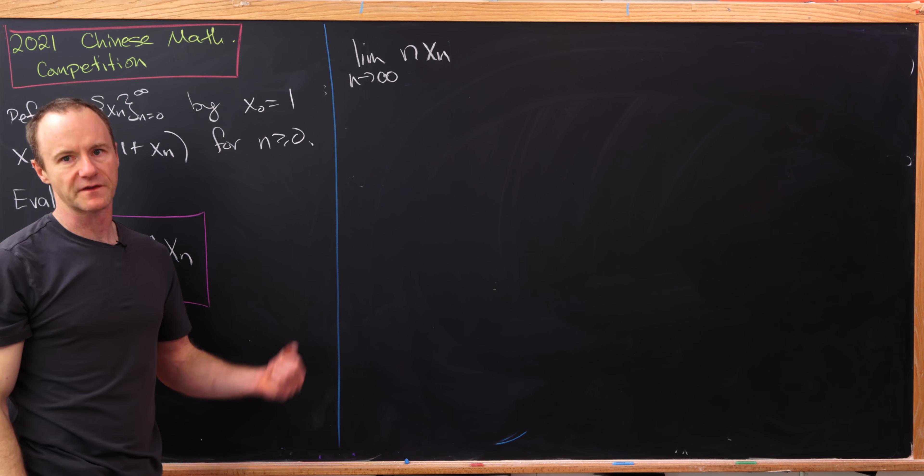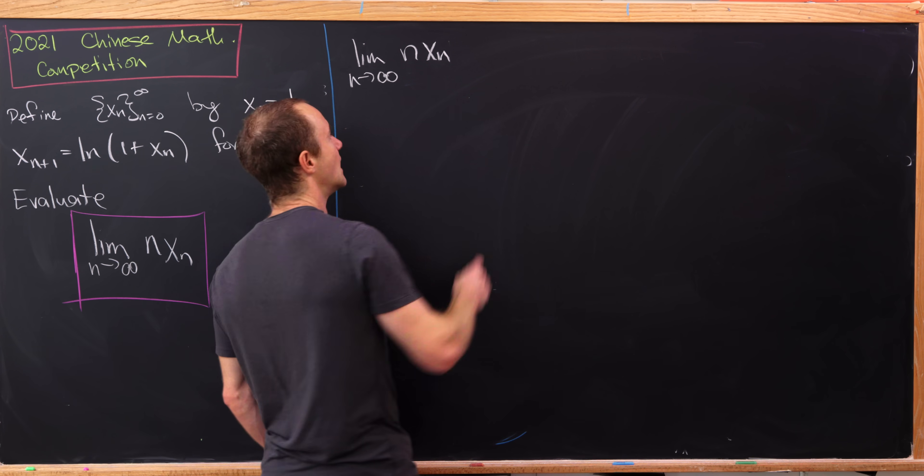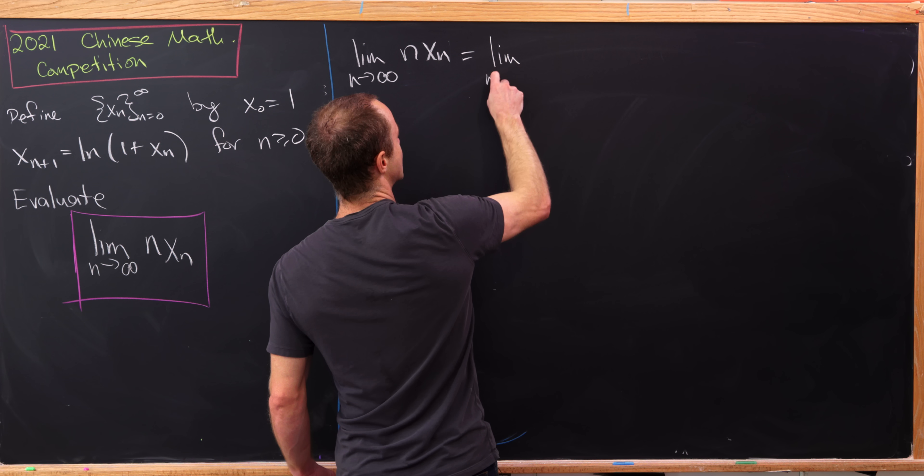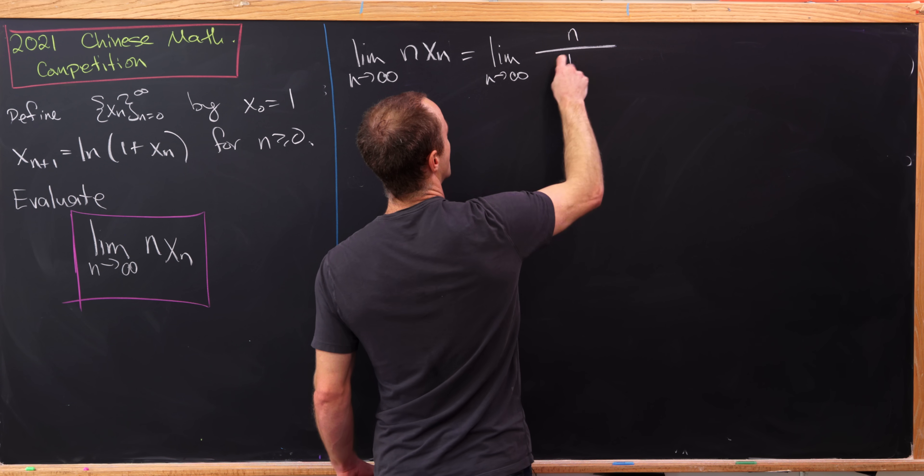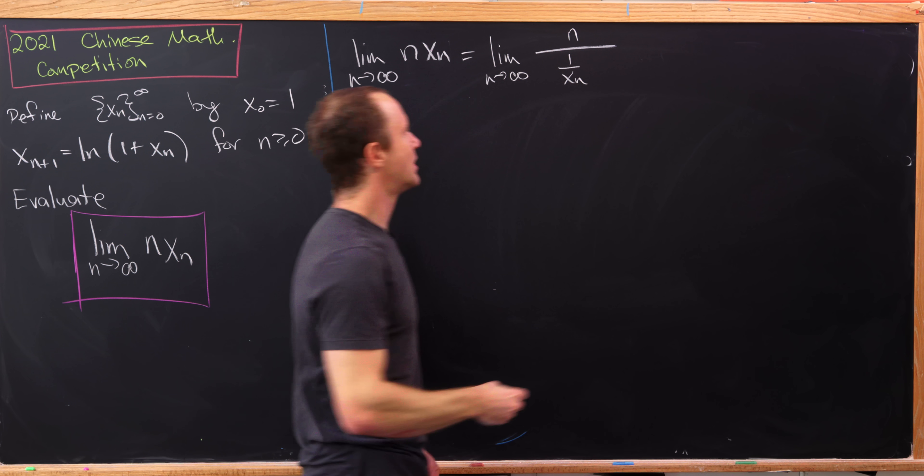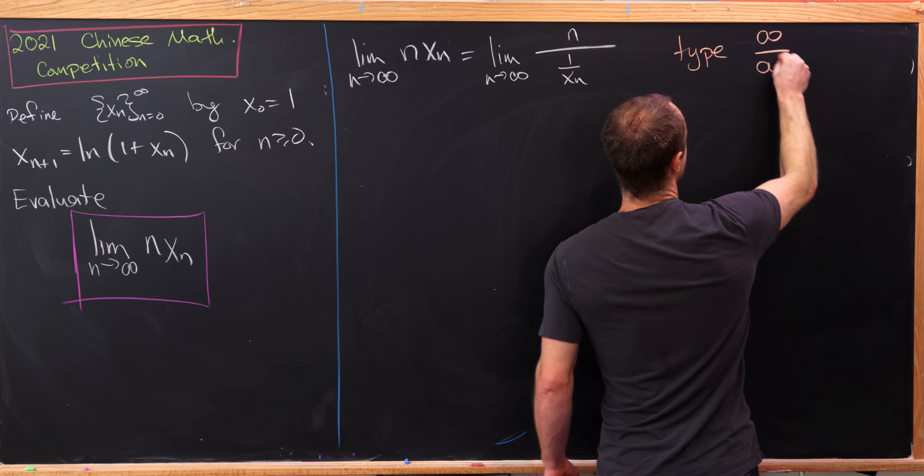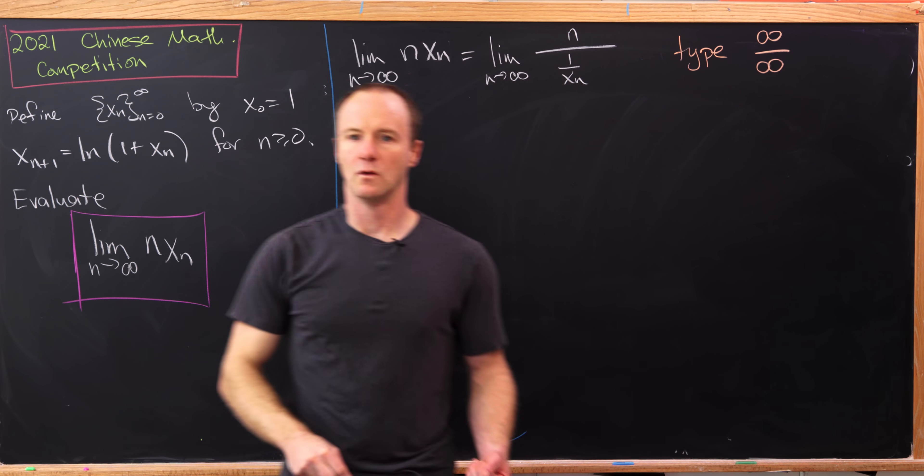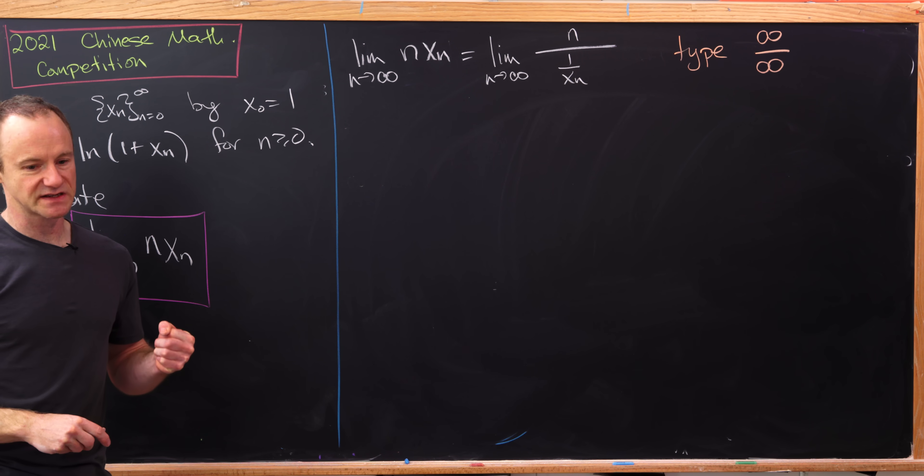So now we're ready to look at the limit in question, which is the limit as n goes to infinity of n times x sub n. I'm going to rewrite this as the limit as n goes to infinity of n over 1 over x sub n. And let's notice as n goes to infinity, that numerator is going to infinity, and the denominator is going to 1 over 0, which is infinity. So this is of type infinity over infinity, which motivates us to use L'Hopital's rule, but we're dealing with sequences here.